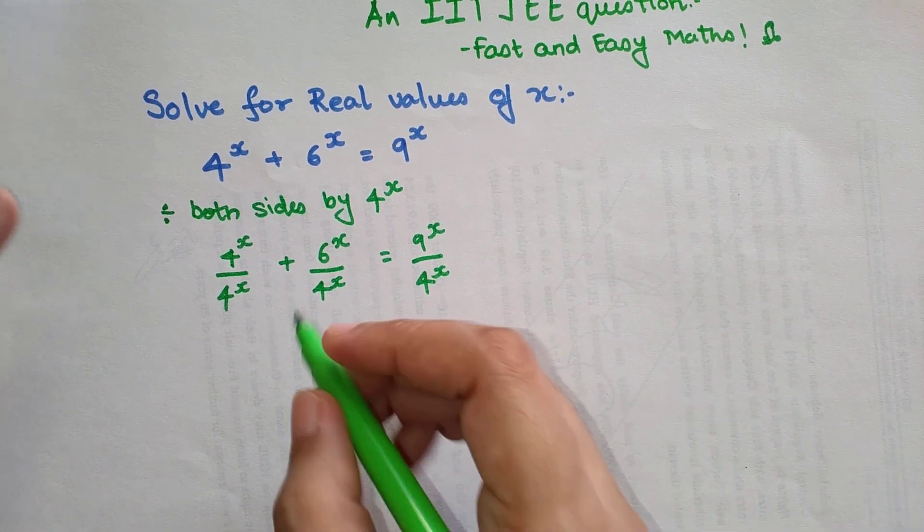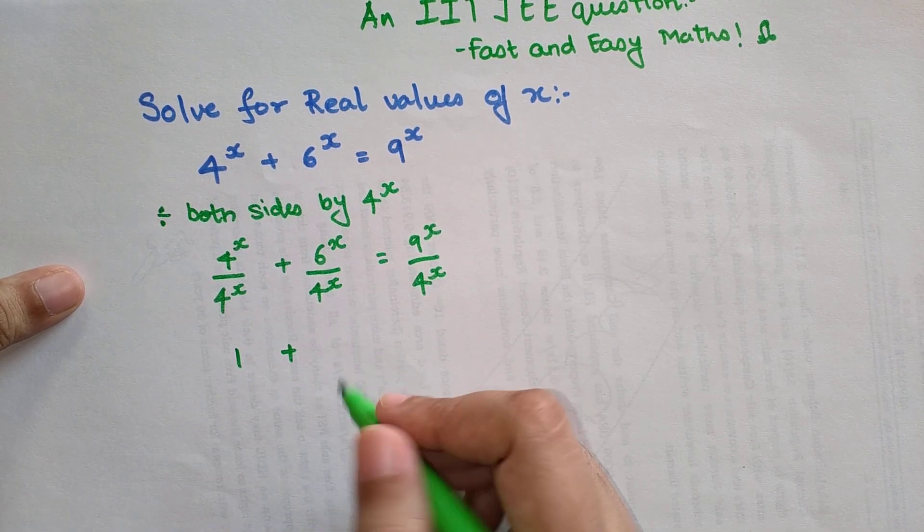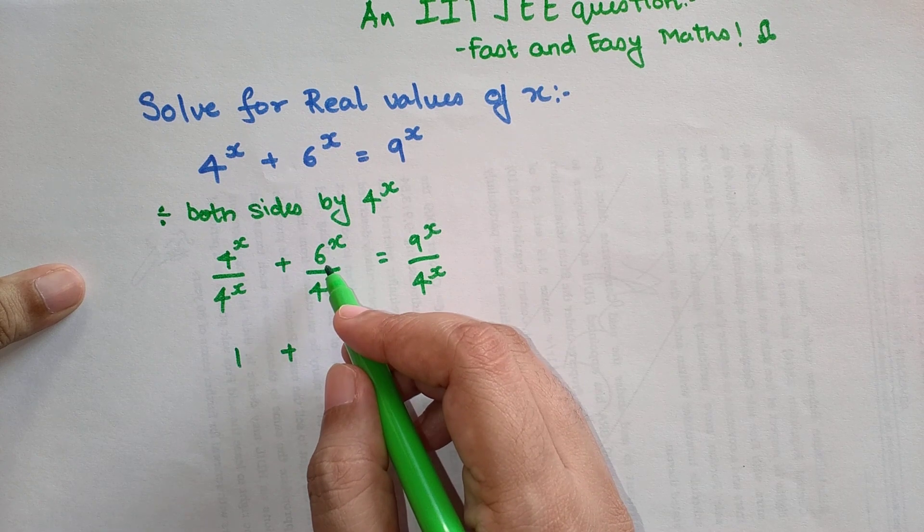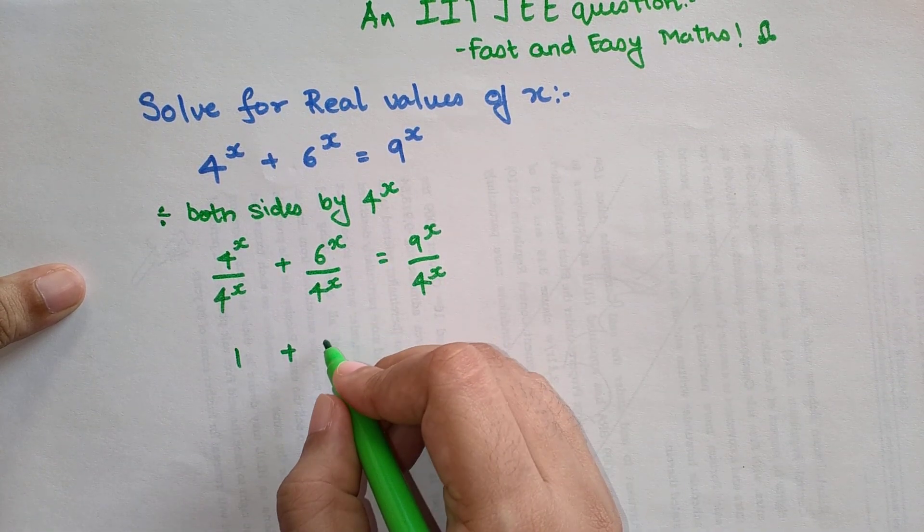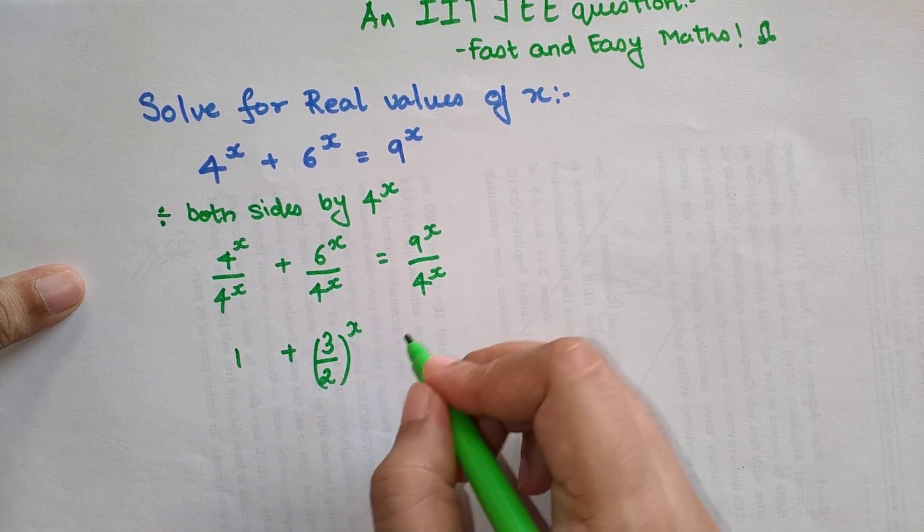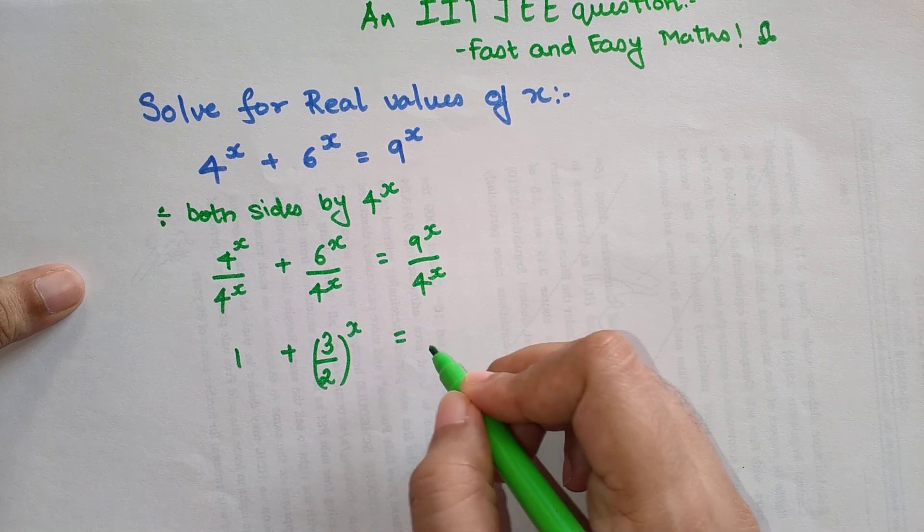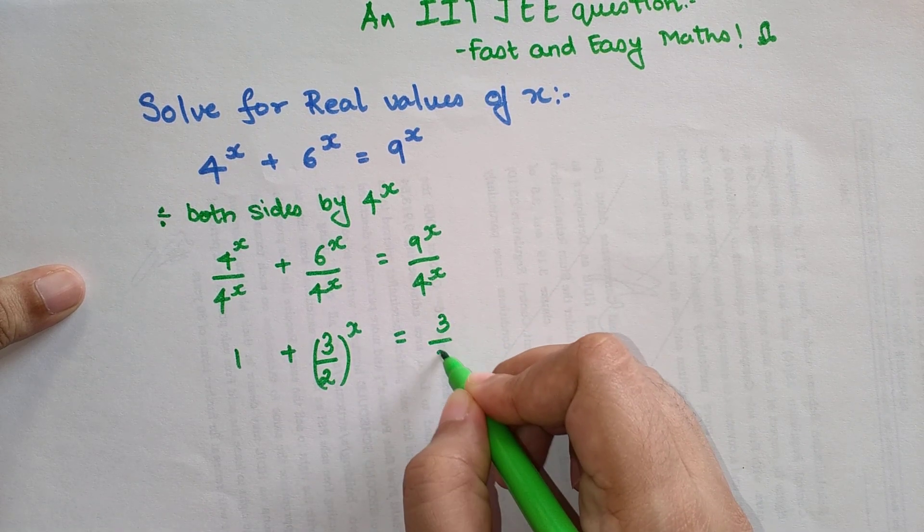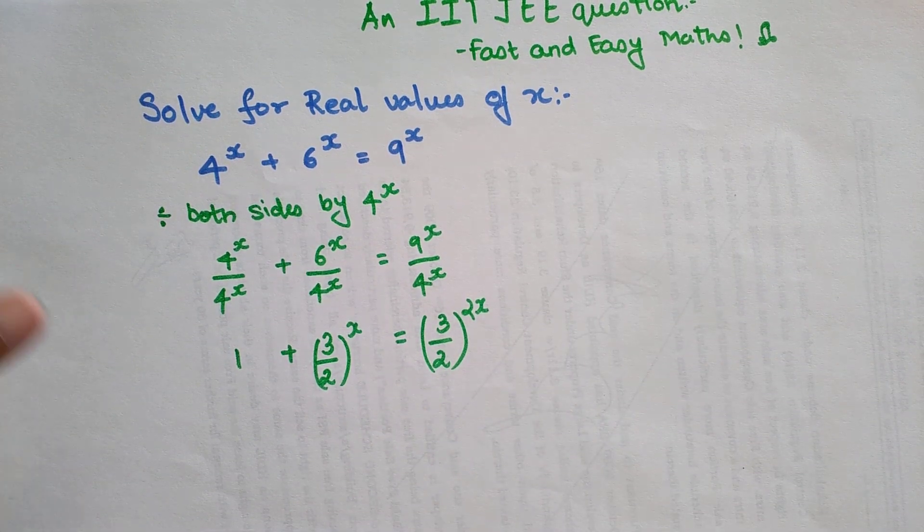If you look over here, I will get this as nothing but 1 plus, since both of them are actually having a common factor of 3 and a common factor of 2, I can directly write this as (3/2)^x. And this is 3 squared and this is 2 squared, so I can write this as (3/2)^x again.